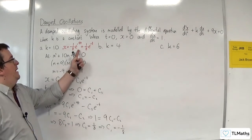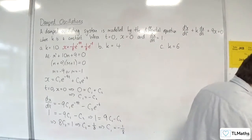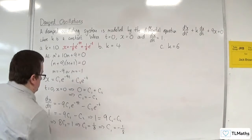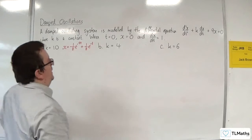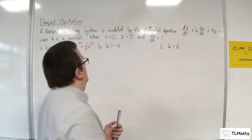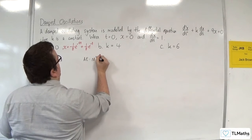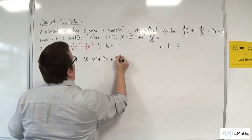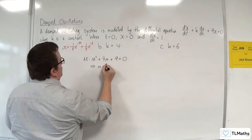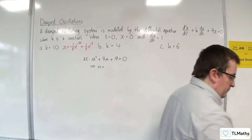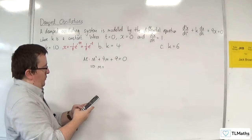So the particular solution when k = 10 is x = −(1/8)e^(−9t) + (1/8)e^(−t). Now let's take a look at the situation when k equals 4. The auxiliary equation would be m² + 4m + 9 = 0.